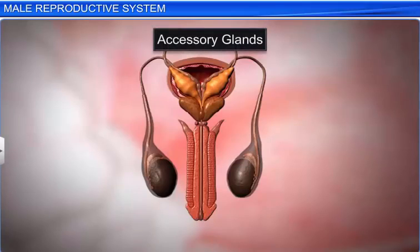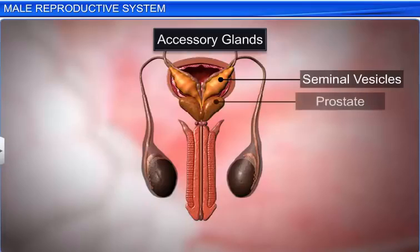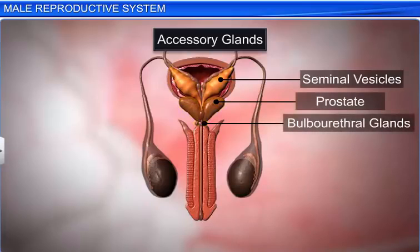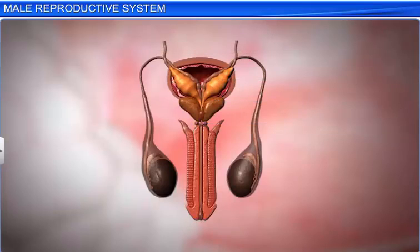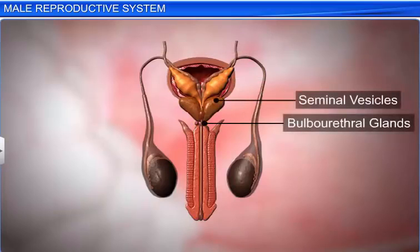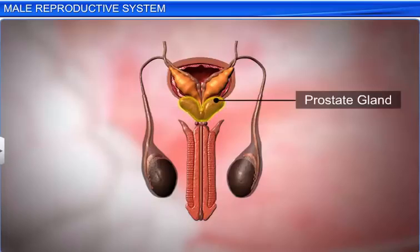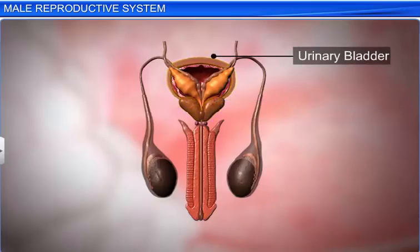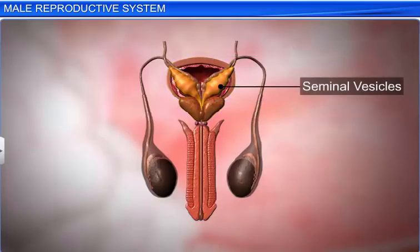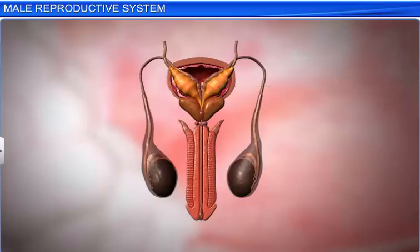The male accessory glands include a pair of seminal vesicles, a prostate, and a pair of bulbourethral glands. They secrete seminal fluid that contains fructose and prostaglandins. The prostate gland is present at the base of the urinary bladder, around the base of the seminal vesicle. It opens into the urethra through many ducts.